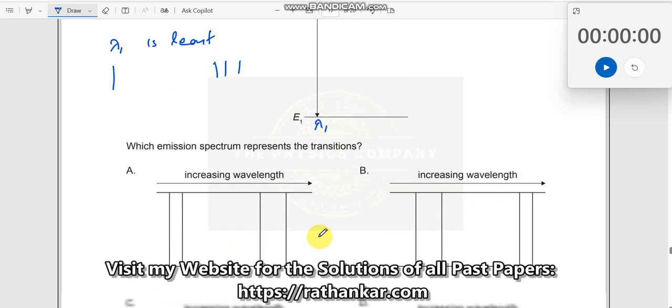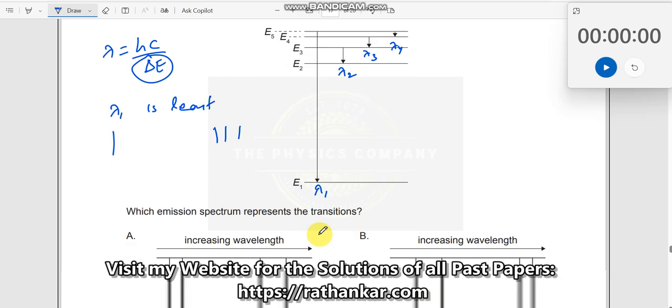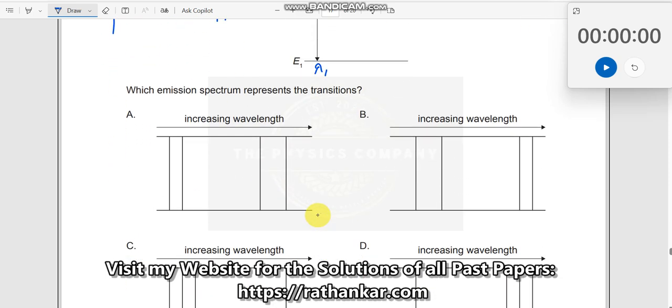Now, let us look at the options here, which means there is a distinct pattern observed—you have lambda 1, then you should have three lines like this. Lambda 1 is the least. Now let us look at this here. Here it is not seen like this.